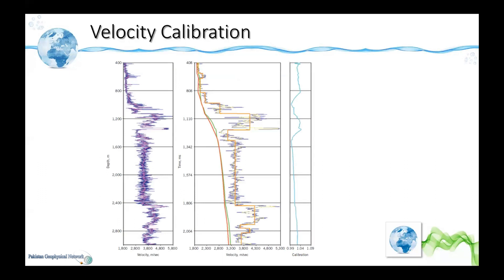Regarding calibration of velocities: the two main sources are well velocities and seismic velocities. Well velocities are more accurate, but their problem is that they are just 1D — along the wellbore — giving velocity variation with depth for different formations. We know that velocity varies vertically as well as laterally, so well velocities give good control at the well point, but as we move away from the well the velocity control deviates.